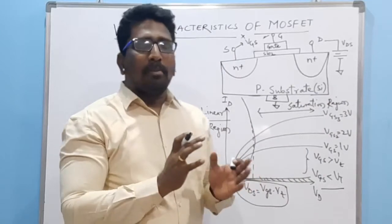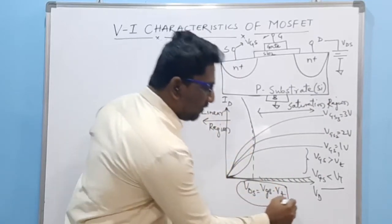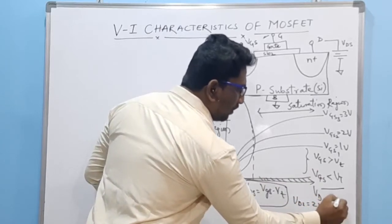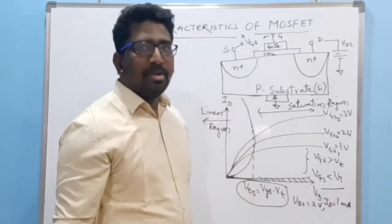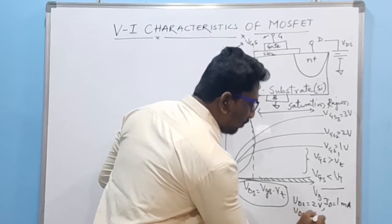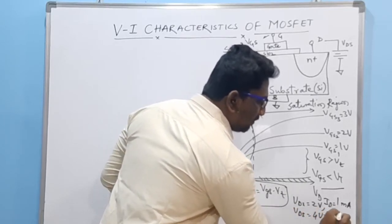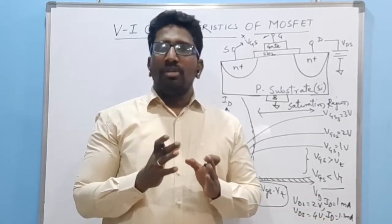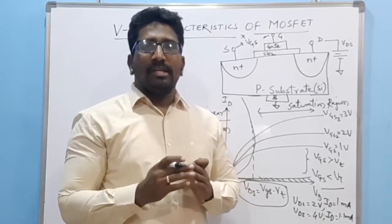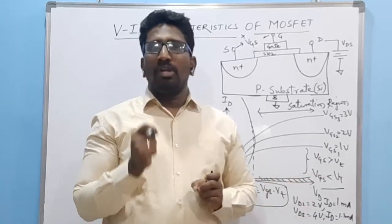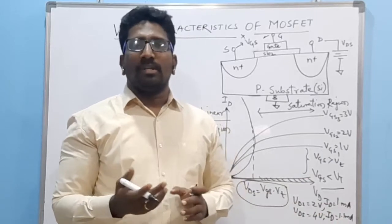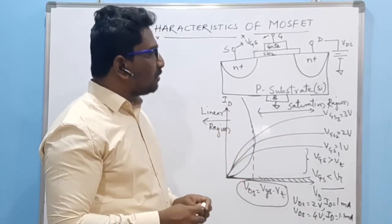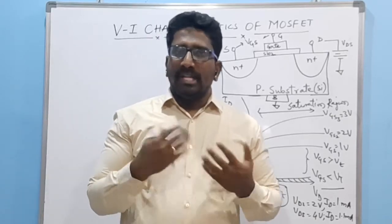In the saturation region, the current does not stay completely constant. For example, if VDS = 2V and ID = 1 mA, then at VDS = 4V the ID might be approximately 1.1 mA — only a very small increase of about 0.1 mA. So increasing VDS has very little effect on the drain current in saturation, but there is a slight increase.